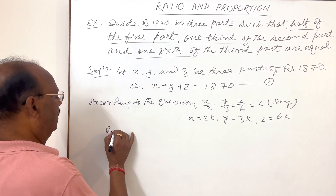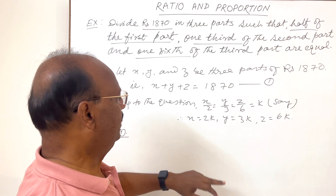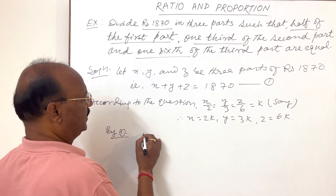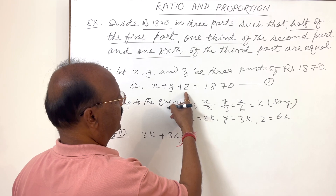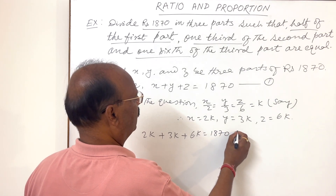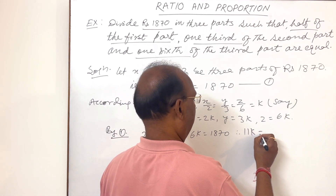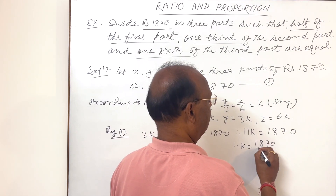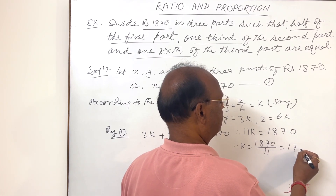Now using relation number one, x plus y plus z is equal to 1870. Substituting the values: 2k plus 3k plus 6k equals 1870. Adding these, 2 and 3 is 5, and 5 and 6 is 11, so 11k is equal to 1870.